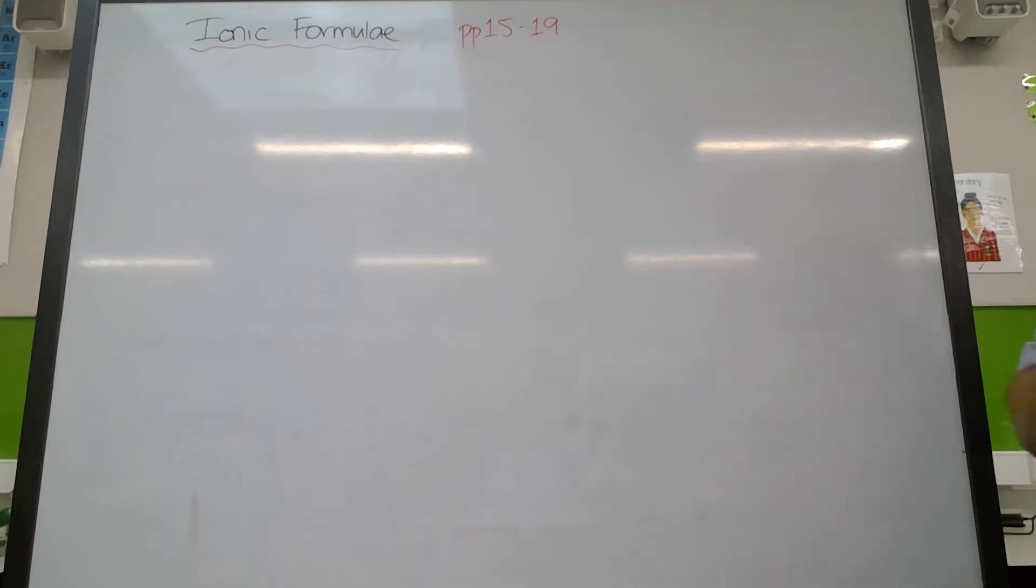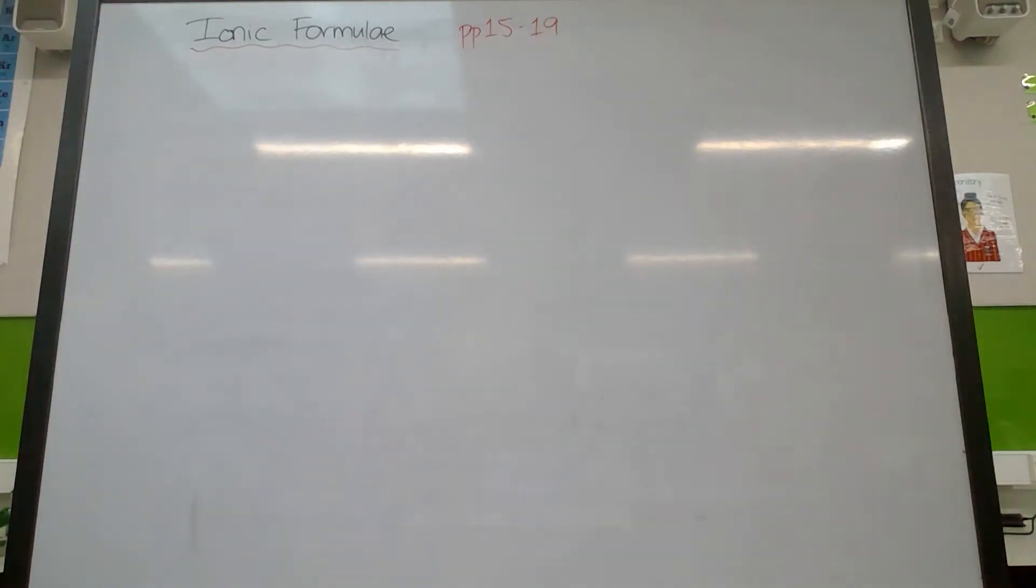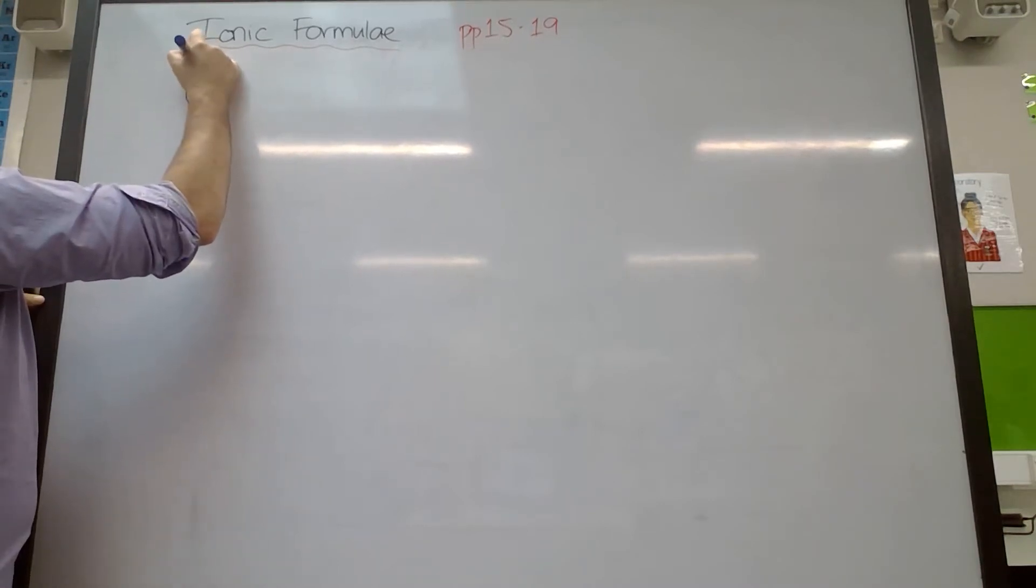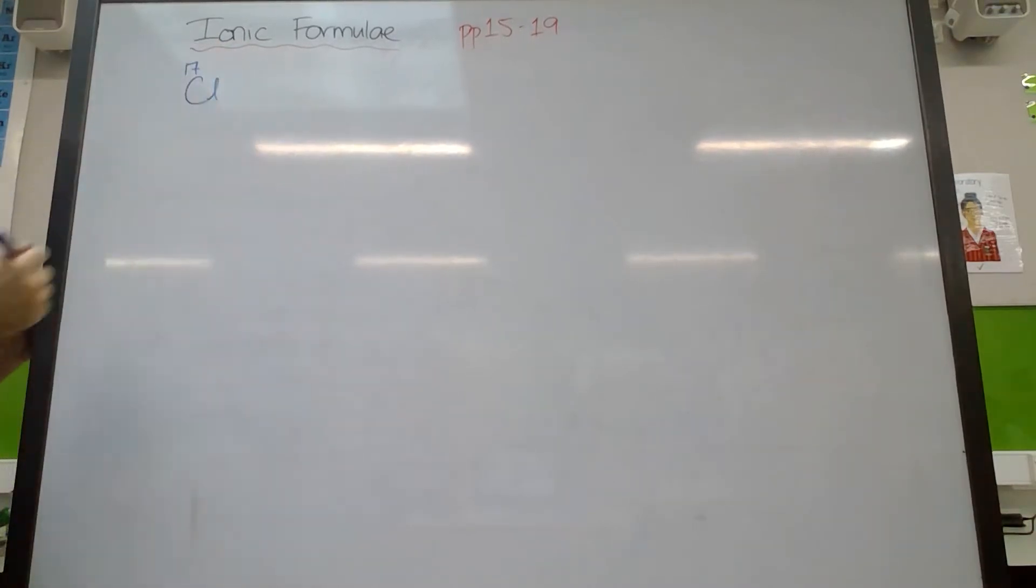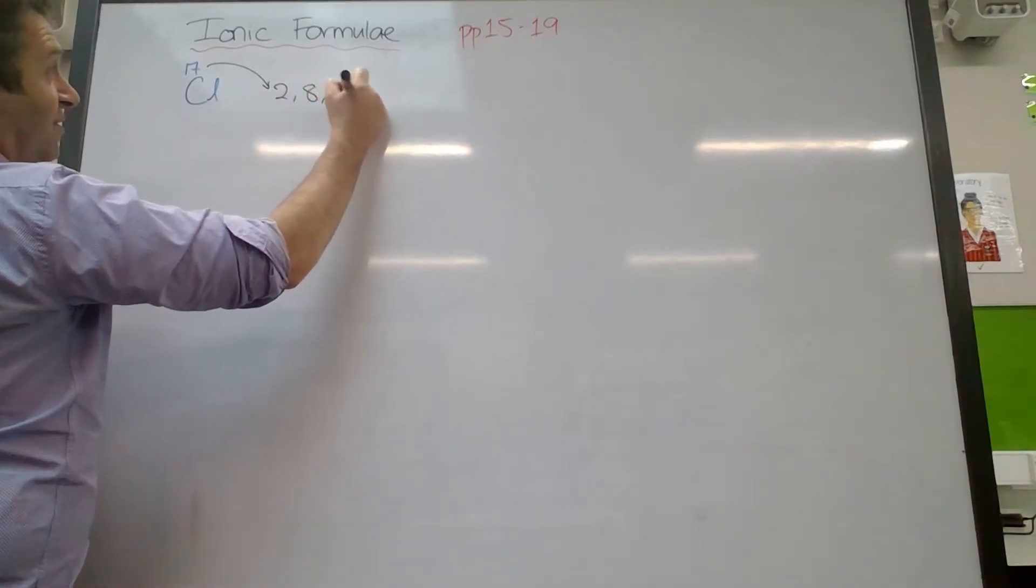The most important thing as chemists is understanding their electron configuration. So one of the atoms we really focus on is chlorine, and we had chlorine being number 17. And we knew 17 meant that it had 17 protons, so it had 17 electrons, and those electrons were arranged in 2, 8, 7.